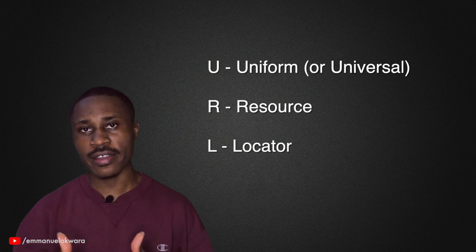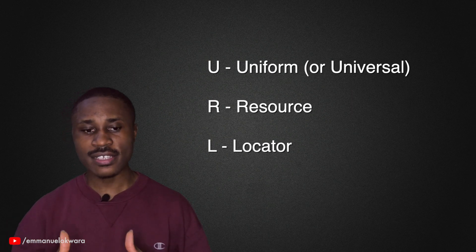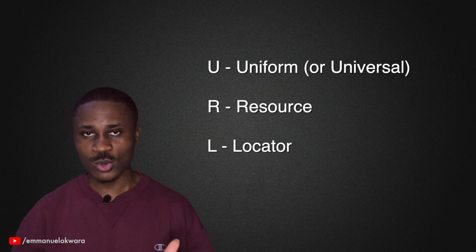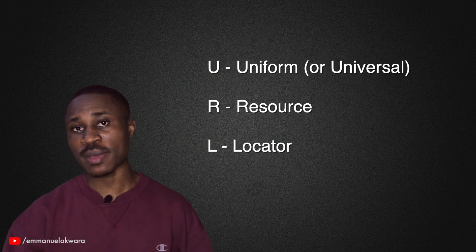If I want to call a friend, I need to know the phone number of that friend. If I want to visit a friend, I need to know the house address. The same way, if you want to communicate to a server, you need to know the address to that server. We have something called a URL — Uniform or Universal Resource Locator — and this is the address to our server. It allows us to know where we want to make a request to and where we should be expecting a response.